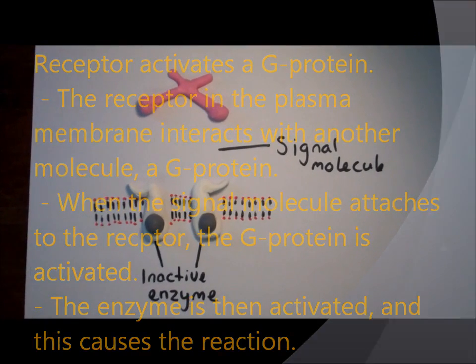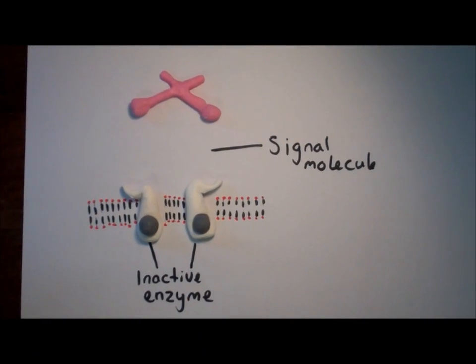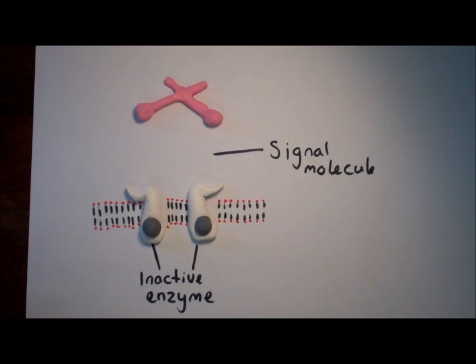Receptor acts as an enzyme. The third type involves an enzyme as a receptor. The receptor is made up of two parts.